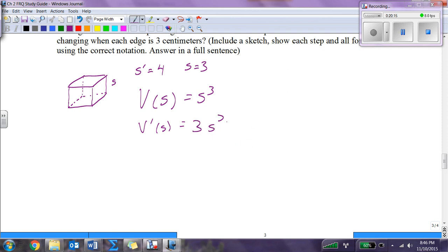We want V prime of 3, because remember we said S is 3. Of 3 is 3 times 3 squared times S prime is 4. Now I have V prime of 3, which is what the question is asking, is 27 times 4, which is 108.